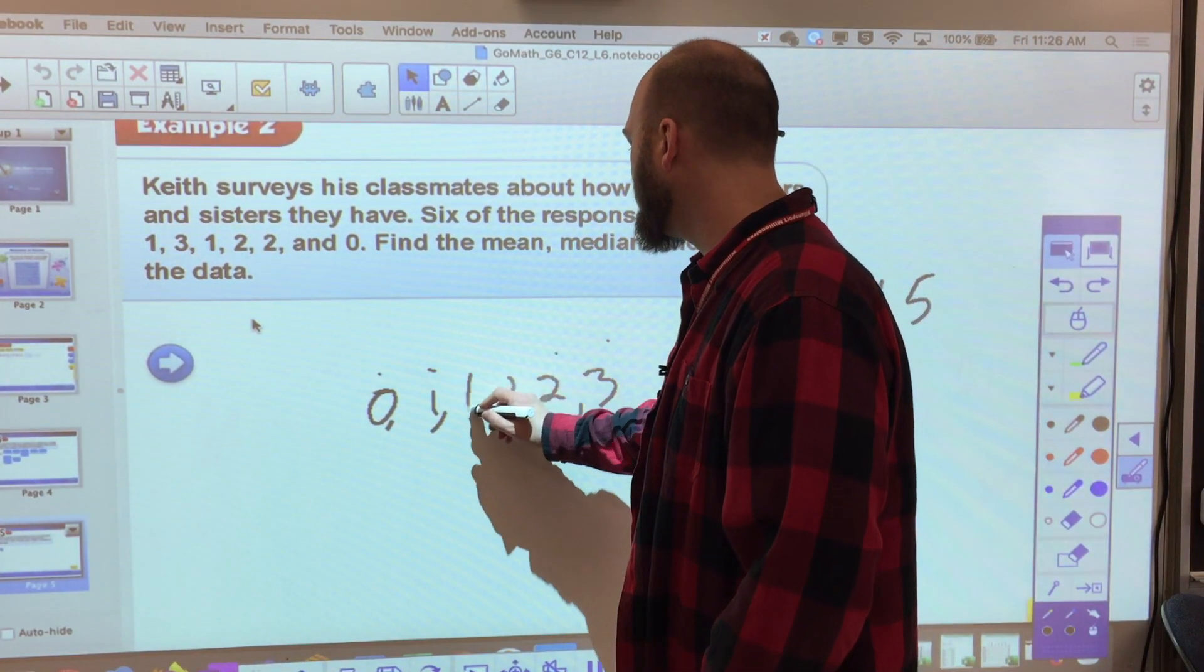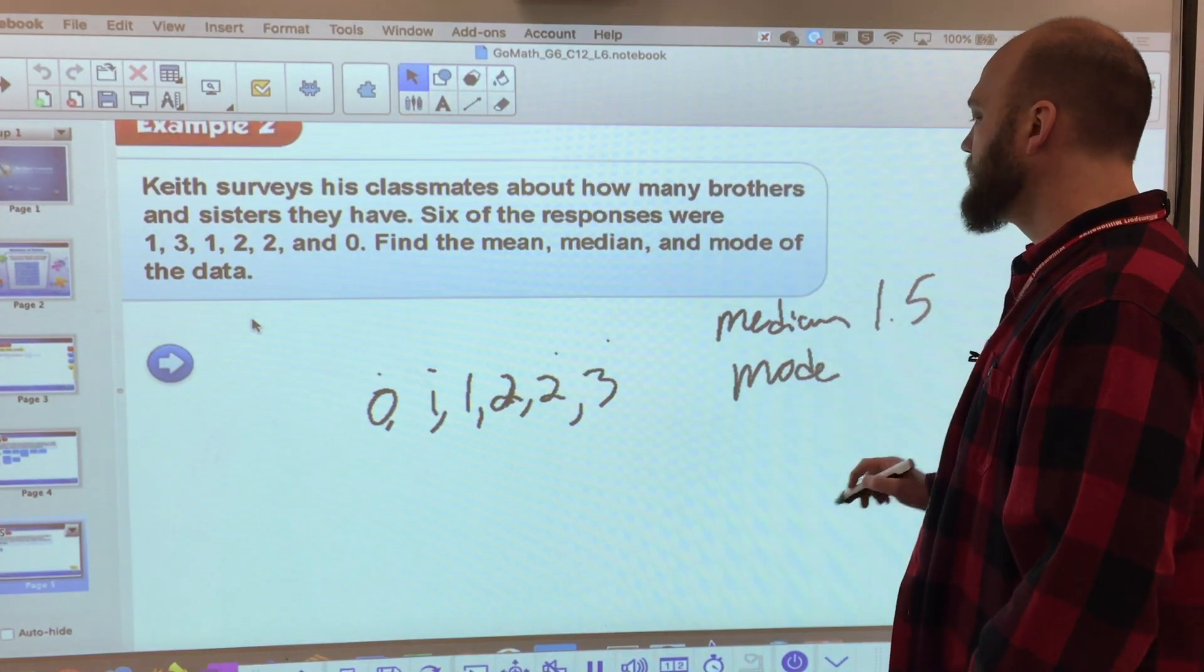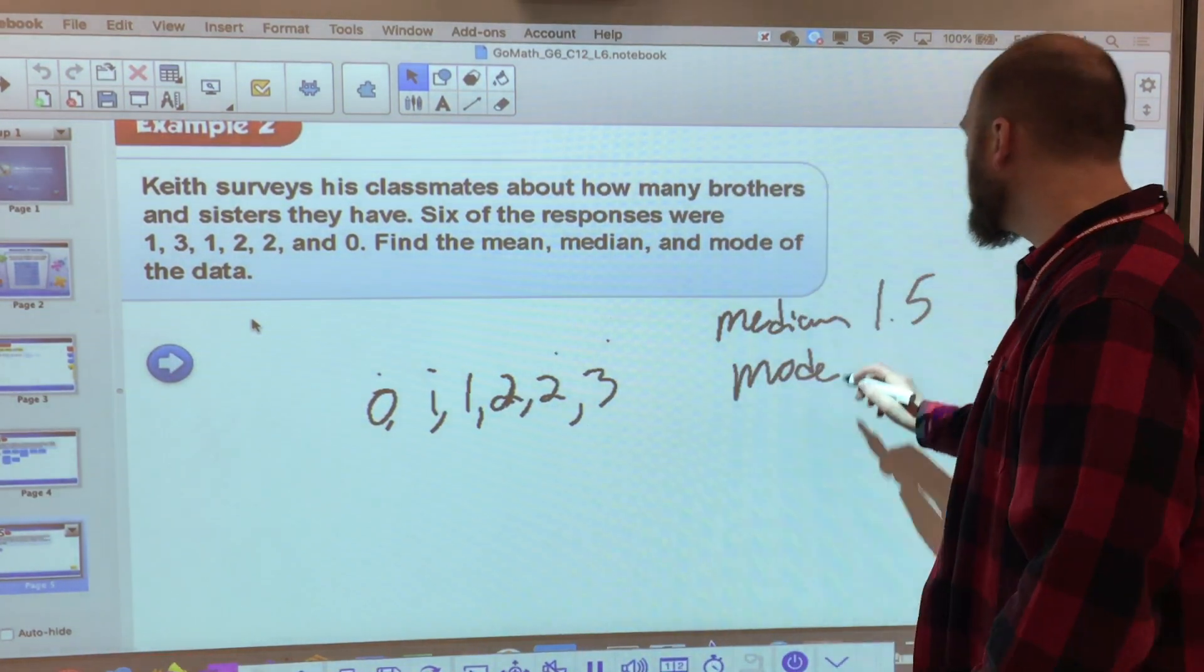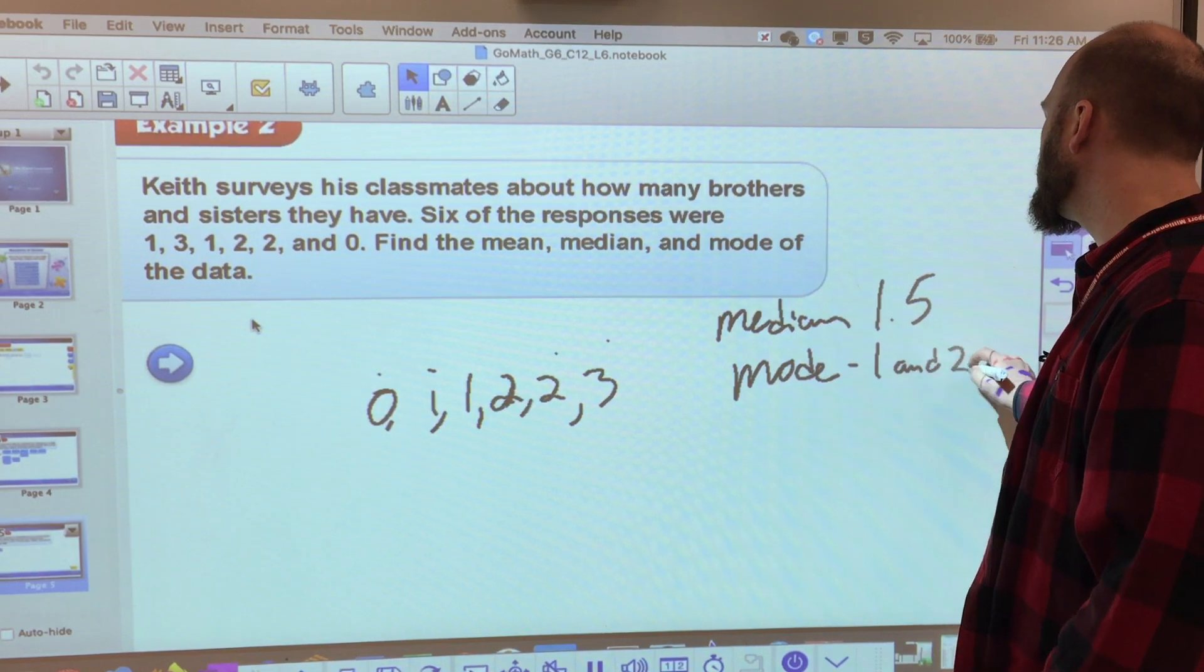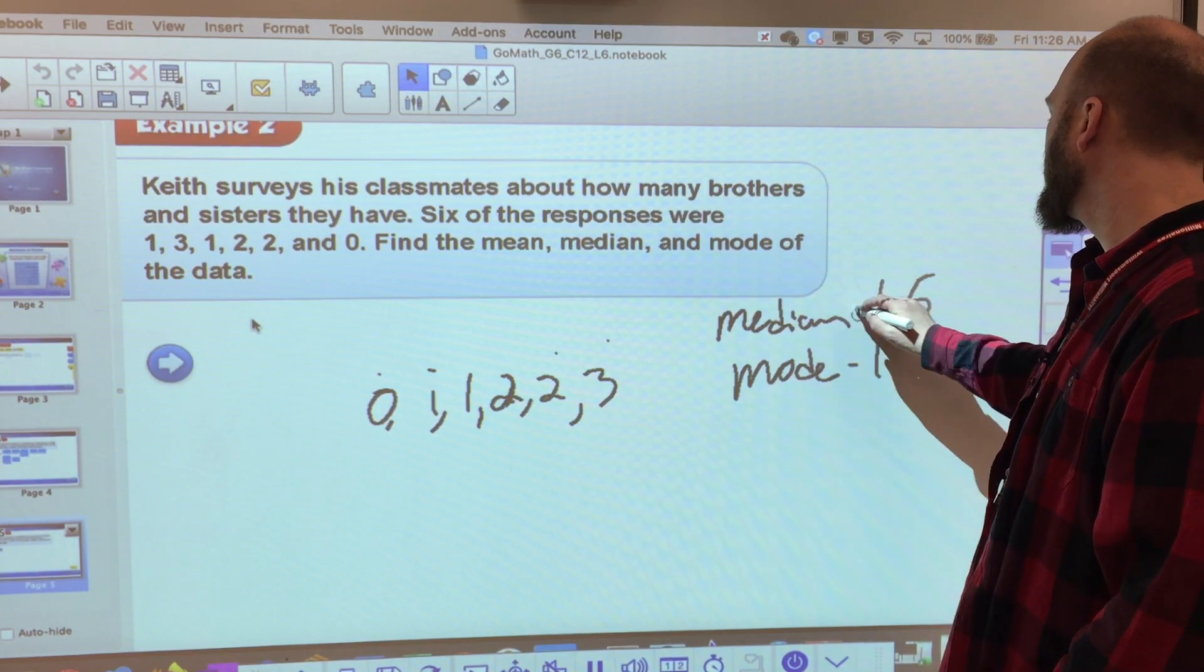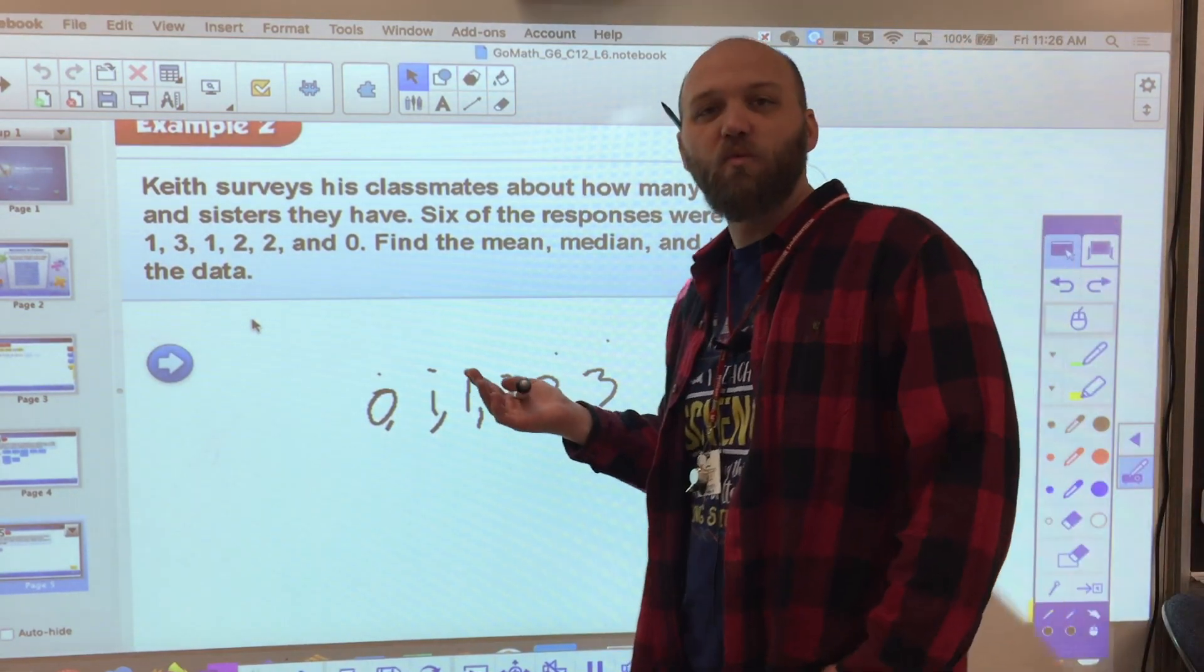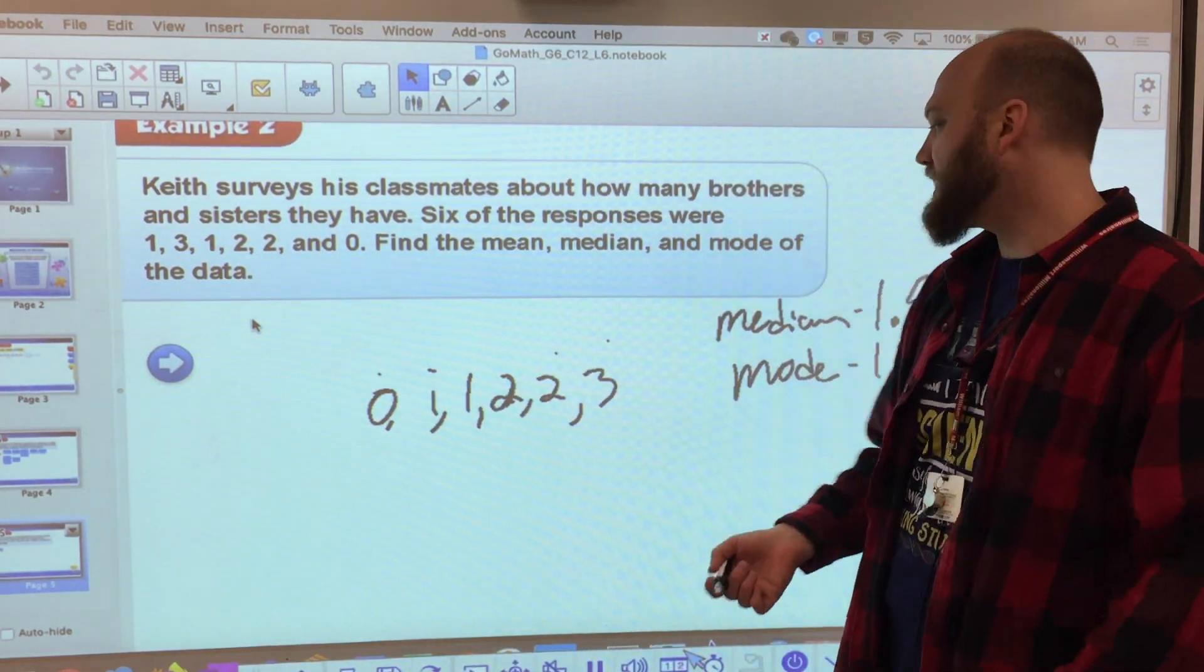And I'd ask myself, which number could be my mode? Which one occurs more often than the others? And I have two of them that occur twice. So my mode is actually 1 and 2. I have two modes. And that's fine. I can really have as many modes as I want. I just need a number that occurs more than any other number.